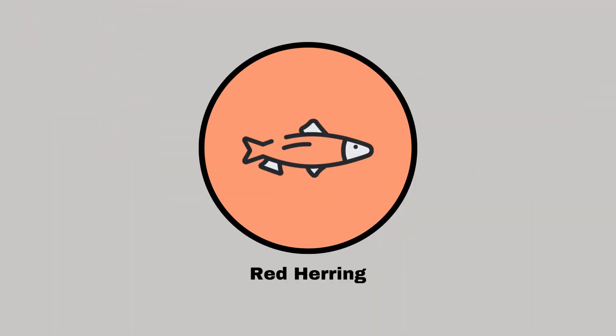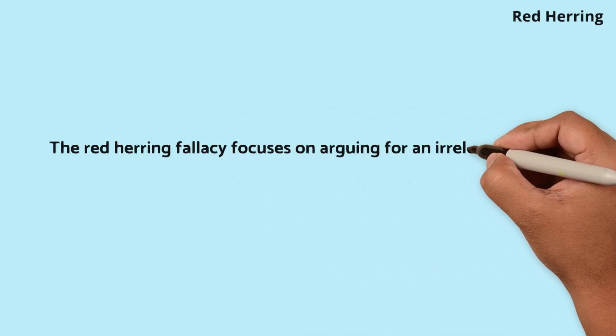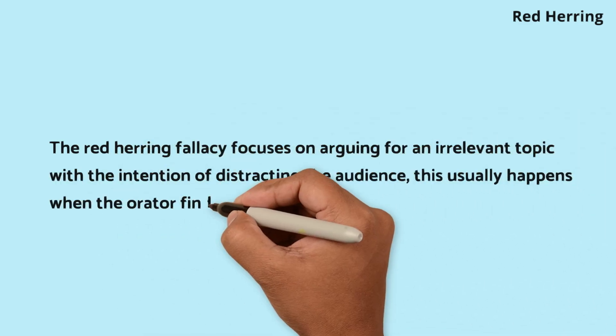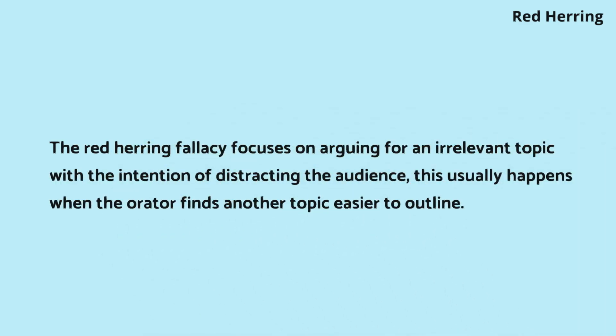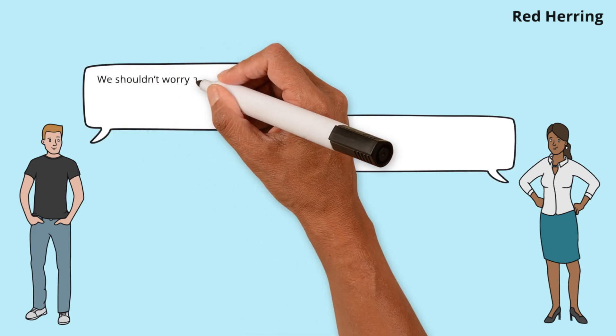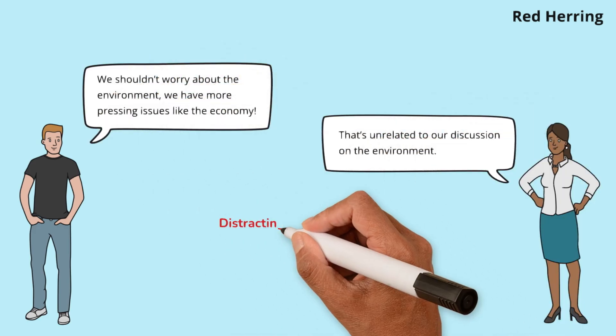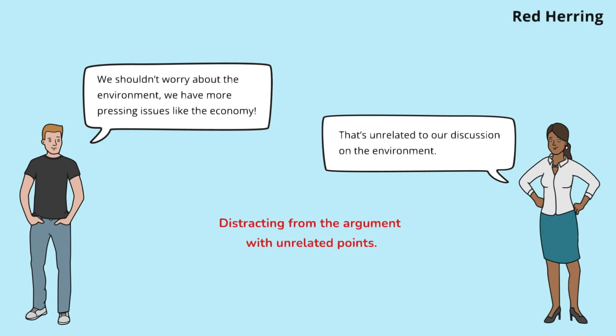Red herring. The red herring fallacy focuses on arguing for an irrelevant topic with the intention of distracting the audience, and usually happens when the orator finds another topic easier to outline. Lucas diverts the argument to an unrelated topic to avoid addressing the original issue. Emily brings the focus back, underscoring the need to stay on topic.